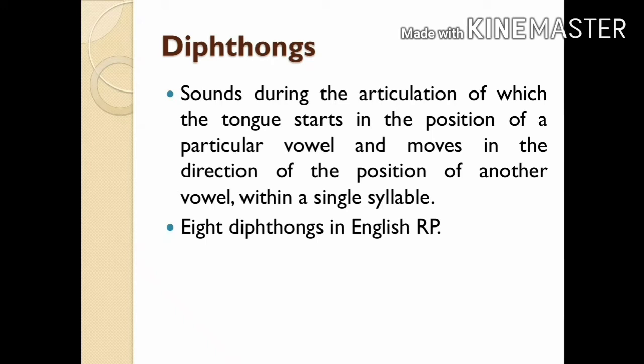The glide should take place within one syllable. For example, in the production of the English diphthong /aɪ/, the tongue moves from the position of /a/ to the position of /ɪ/. If the two vowels belong to two different syllables, the glide will not be considered a diphthong but a sequence of two vowels. There are eight diphthongs in English RP.